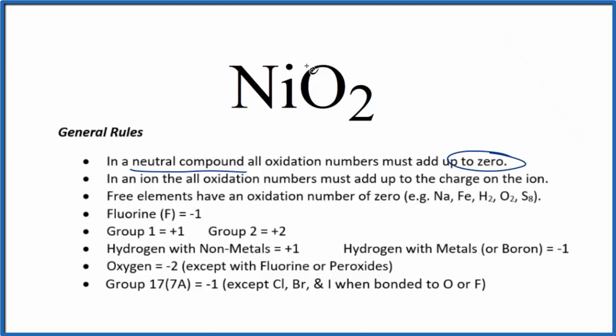Nickel is a transition metal. It can have different oxidation states depending on what it's bonded to, so we have to look at the oxygen here. Oxygen is almost always minus two, so each oxygen has an oxidation number of minus two.